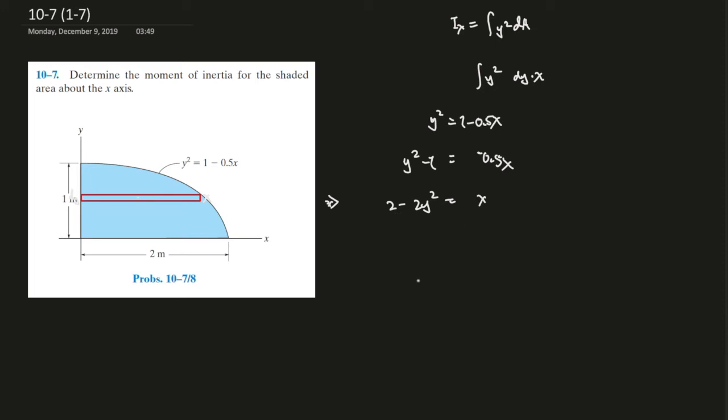So now we can plug everything into over here, so dy and x equals 2 minus 2y squared over here, dy. And this is, we're plugging into a y value to get us x value, so it should be the range from 0 to 1 over here. And yeah, let's solve the integral real quick.